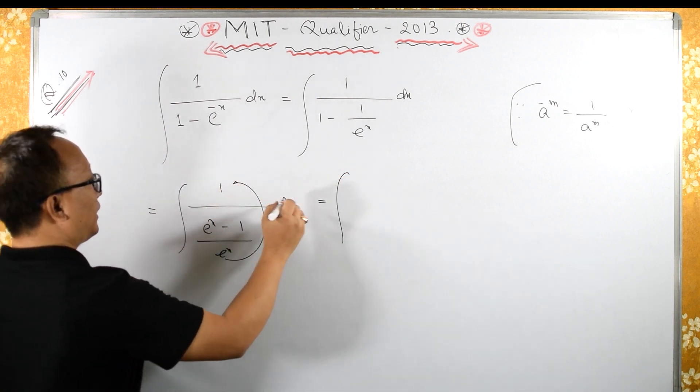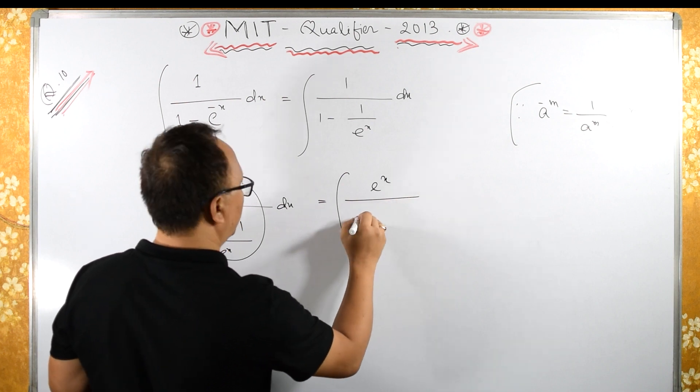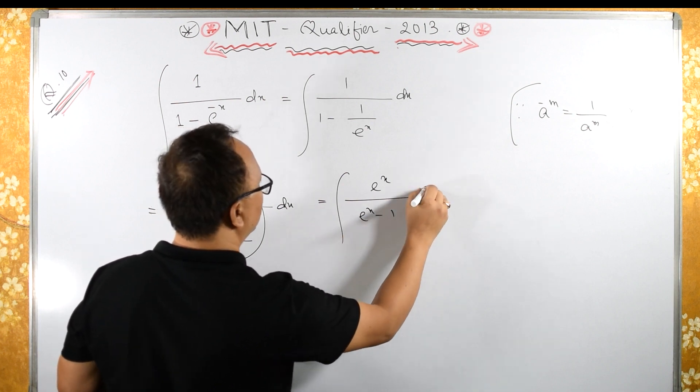I can send this e raised to x up, so e raised to x upon e raised to x minus 1 dx.